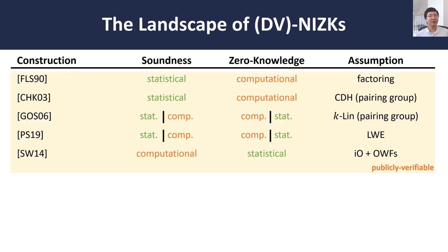Non-interactive zero knowledge has received extensive study, and today we know of many constructions from a wide range of assumptions. Publicly verifiable NIZKs in the CRS model are known, for example, from assumptions like factoring, from pairing-based assumptions, from lattice-based assumptions, as well as from indistinguishability obfuscation. Some of these constructions provide statistical soundness, others provide statistical zero knowledge.